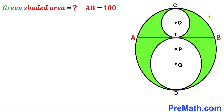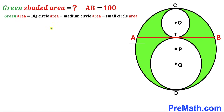Let's assume this is our big circle, this is our medium circle, and this is our small circle. We can observe that the green shaded region area equals the area of the big circle minus the area of the medium circle minus the area of the small circle.